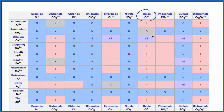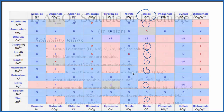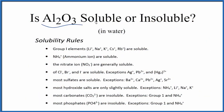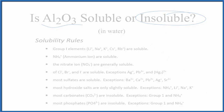You can see from the table that most of these oxides are insoluble. So in answer to our question, Al2O3, aluminum oxide, is insoluble in water. We should note that a very small amount might dissolve, but hardly any. This is Dr. B, and thanks for watching.